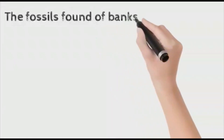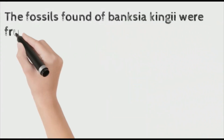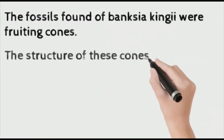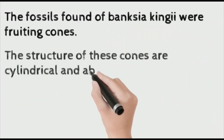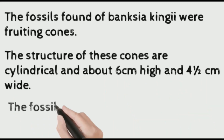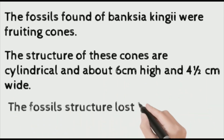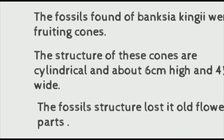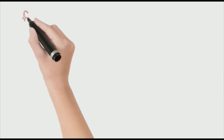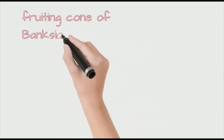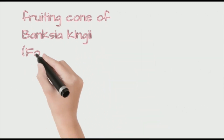The fossils found of Banksia kinjiensis were fruiting cones. The structure of these cones was cylindrical, about 6 centimeters high and 4.5 centimeters wide.